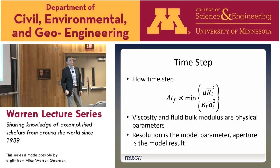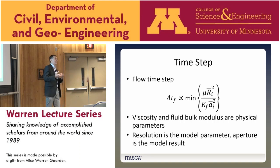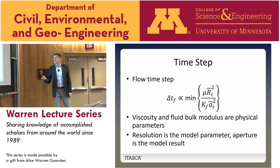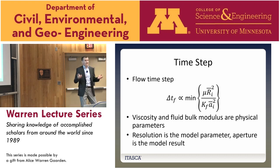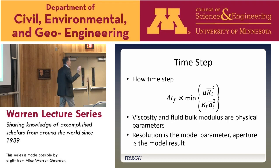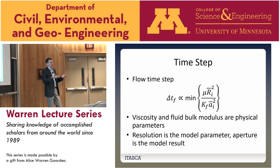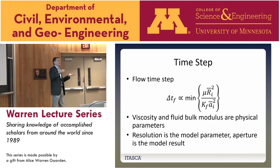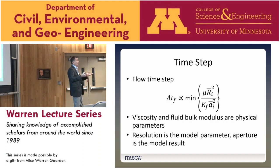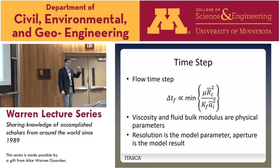One issue we always deal with is runtime. Two things affect runtime: model size — how many nodes and springs we have — and the critical time step. The mechanical model and flow model both have different time steps. When solving quasi-static problems, real time comes only from the flow model. We cycle the mechanical model not to keep it in sync with flow model time but just to ensure it stays in equilibrium. This allows significant model optimization, so the only critical thing is the time step of the flow model.